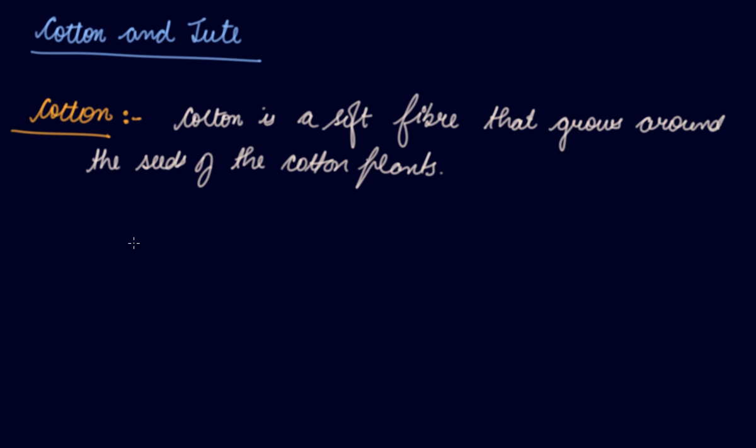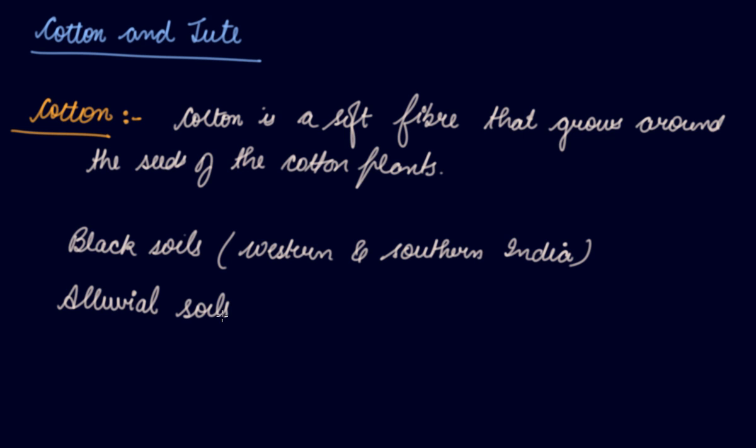How do you get your cotton? You get it in the black soils found in western India and southern India. Then you get alluvial soil of northern India. So these are the soils that are suitable for cotton.